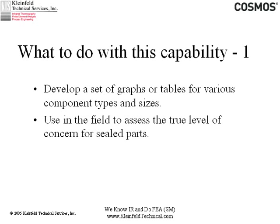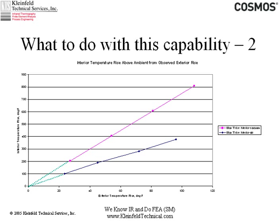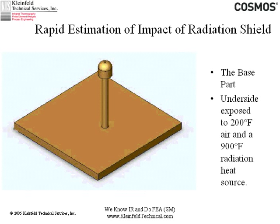Whether the measurement is infrared — as I often do — or a thermocouple, you need to know how to relate one to the other. In this case, you can actually develop a set of graphs to use in the field as guidance. On the bottom is the exterior temperature plotted as a rise above ambient; on the right is the interior temperature as a rise. One curve is for a component that has air in it, and the upper one is for a component with vacuum in it, which has fewer methods for getting heat out. For example, if you had a 40 degree observed rise outside in a vacuum component, you'd be expecting approximately a 300 degree rise at the point of interest.